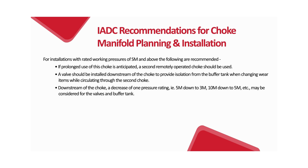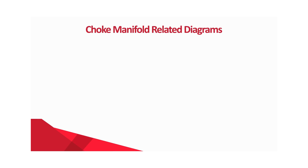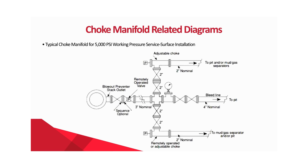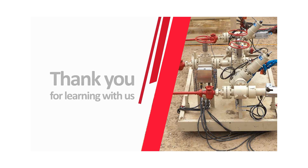Downstream of the choke, a decrease of one pressure rating — such as 5M down to 3M or 10M down to 5M — may be considered for valves and buffer tank. Typical choke manifold diagrams include configurations for 5000 PSI working pressure surface installation, and for 10,000 PSI and 15,000 PSI working pressure surface installation. Thank you for learning with us.